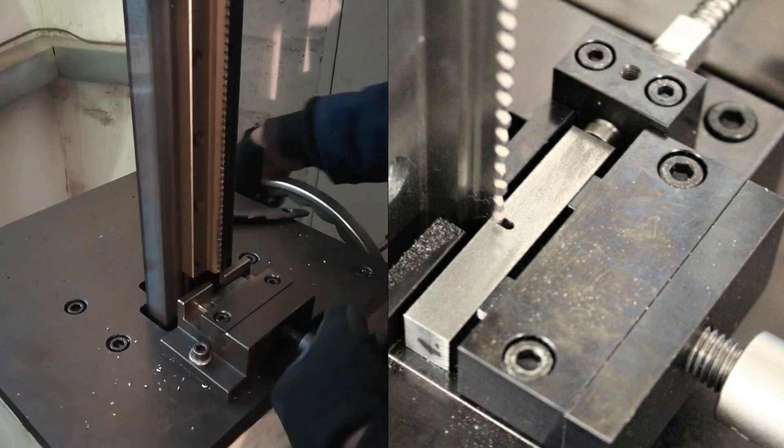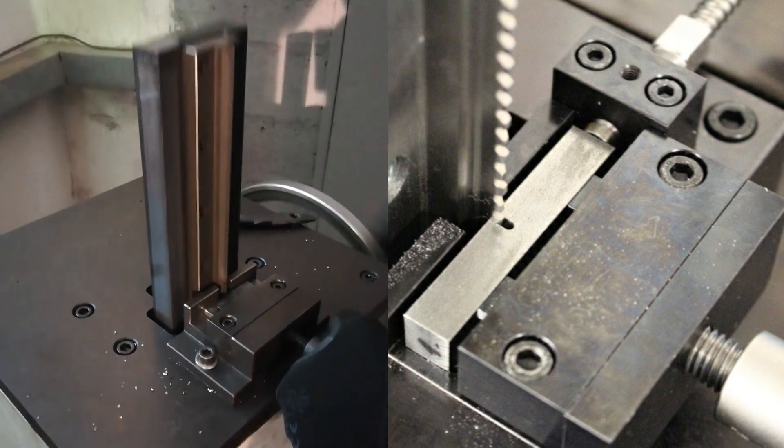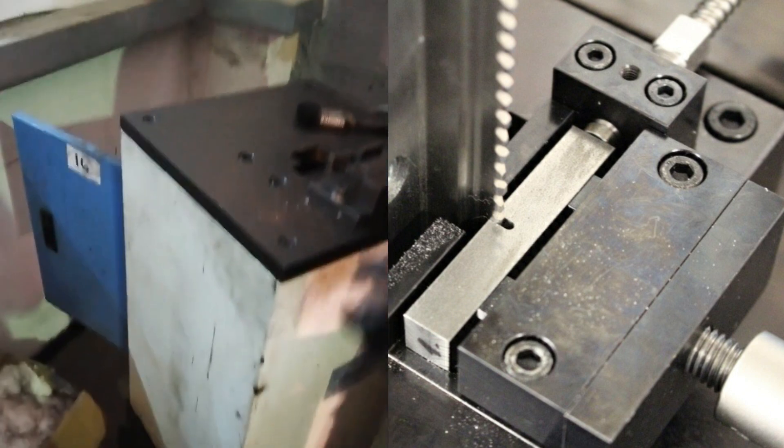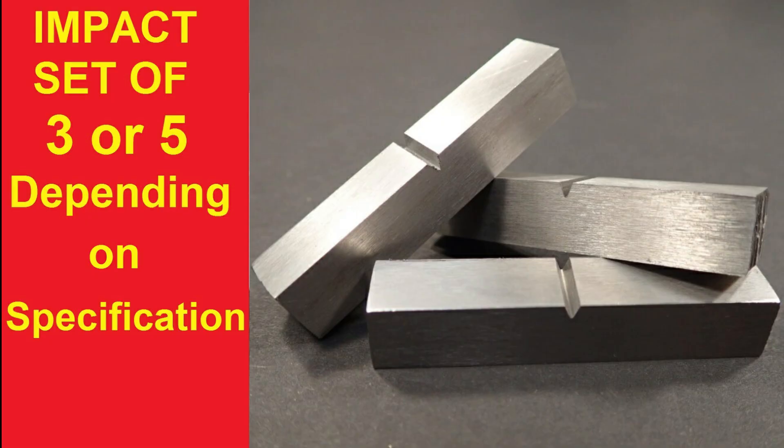One set will be for the heat affected zone, one set will be for the weld, and one set will be for the base material. The notch is 2 millimeter deep with a 45 degree opening.